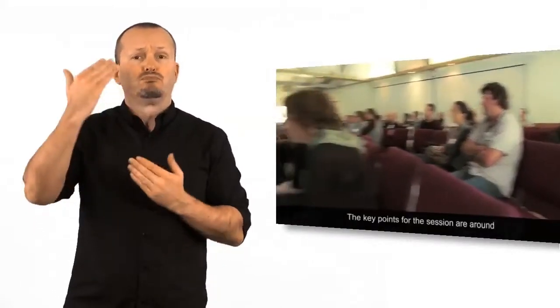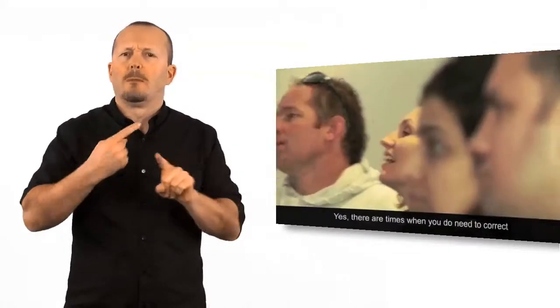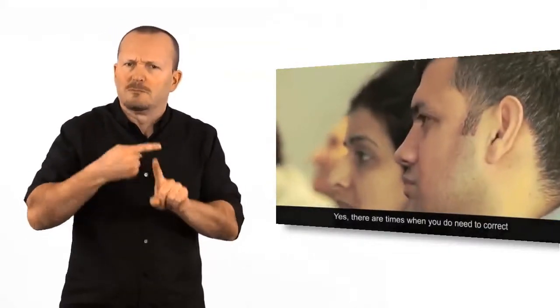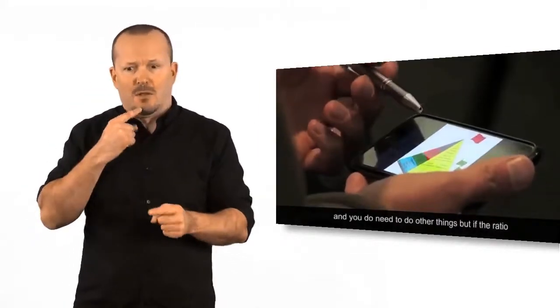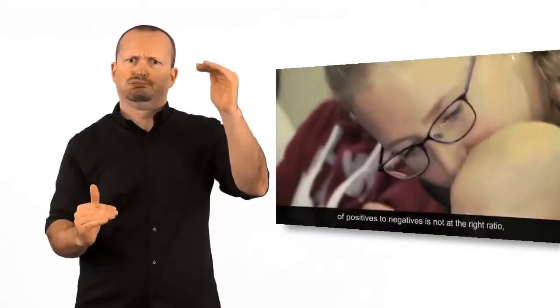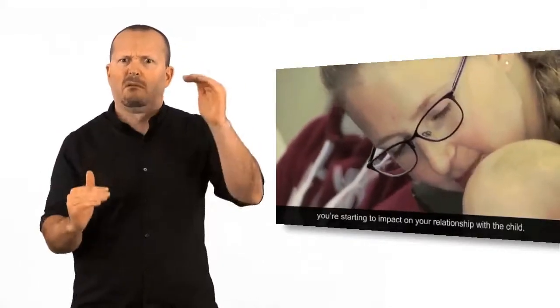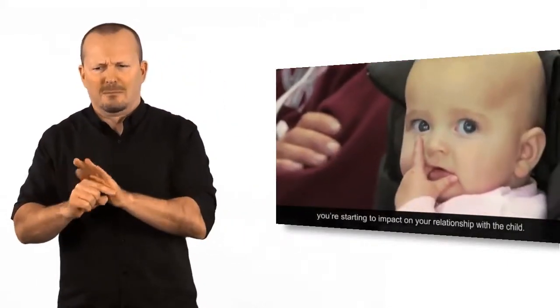The key points for the session are around giving lots of positive attention. Yes, there are times when you need to correct and do other things. But if the ratio of positives to negatives is not right, you're starting to impact your relationship with the child. Our touchstone is five to six positives for every one negative.